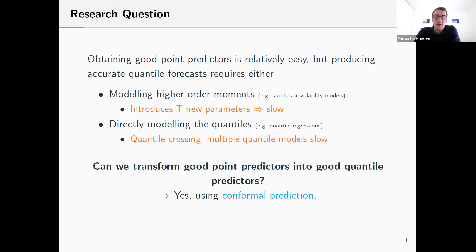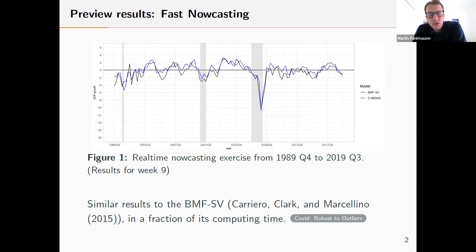To preview the results, I apply my method to two empirical examples. The first one is related to nowcasting US GDP, specifically the five percent quantile of US GDP growth. This is a real-time exercise from 1989 to 2019. In blue is my method and in black is the Bayesian mixed frequency model with stochastic volatility, which is one of the best nowcasting approaches out there. The results are quite similar, however the blue line is estimated within minutes whereas the black line takes several hours to conduct this real-time exercise, so it's a fast alternative.